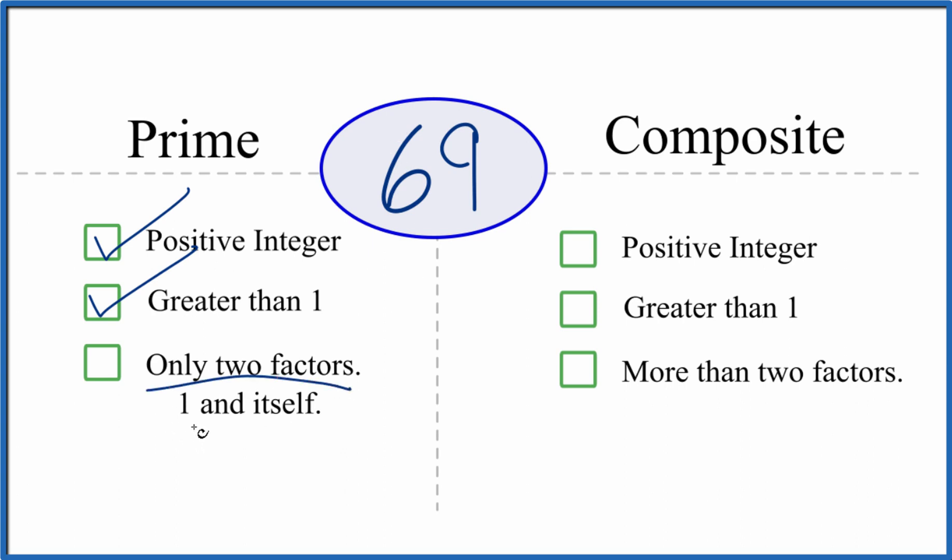And are there only two factors, one and 69, that are divisible into 69? So we know one times 69 equals 69. But are there any other factors?